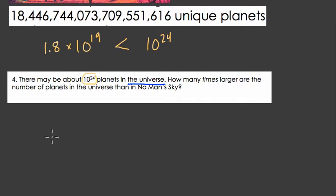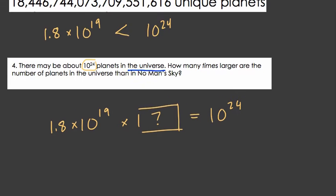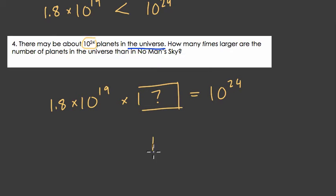So what do we have to multiply the number of planets by in the video game No Man's Sky? What do we have to multiply that by so that we get the number of planets in our universe? So let's do that. How do we do that? Well, we divide, right? 10 to the 24th divided by 1.8 times 10 to the 19th. And this is a semi-friendly division. Even if it looks really gross we can manage it.